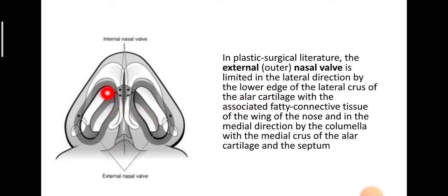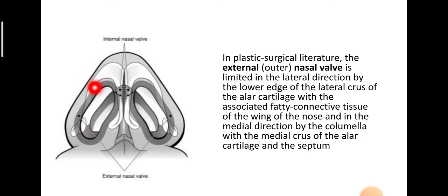The lower lateral cartilage has a medial crus and a lateral crus. The lateral crus has an upper edge and a lower edge. The lower edge of the lateral crus of the lower lateral cartilage with its associated fatty connective tissue and in the medial direction by the columella constitutes the external nasal valve.